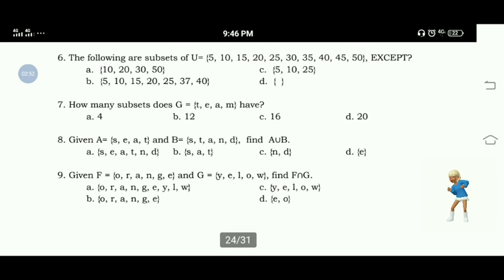Number 6: The following are subsets of U, elements 5, 10, 15, 20, 25, 30, 35, 40, 45, 50, except: A, 10, 20, 30, 50. B, 5, 10, 15, 20, 25, 30, 37, 40. C, 5, 10, 25. D, empty set.